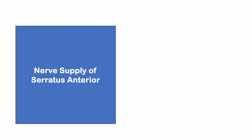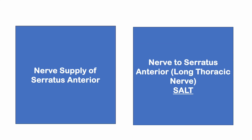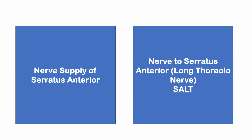Nerve supply of serratus anterior — this one is also very easy. The nerve supply to serratus anterior is the nerve to serratus anterior, also known as the long thoracic nerve. How I remember it: SALT — S-A-L-T — Serratus Anterior, Long Thoracic nerve.